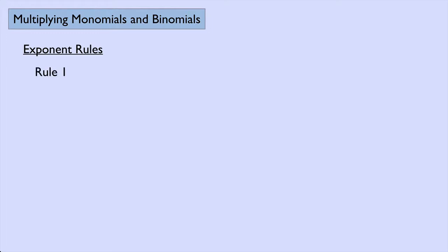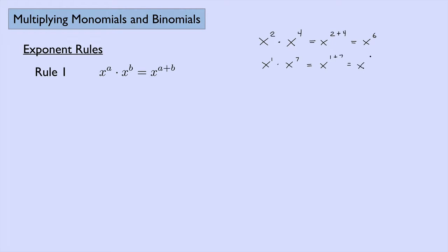Now let's look at multiplying monomials and binomials, but before we do that let's review a few of the exponent rules we're going to use. Rule one says that x to some power times x to another power equals x to the a plus b power. For example, x squared times x to the fourth would be x to the two plus four power, which is x to the sixth power. Another example: x times x to the seventh — this x is really x to the first power — so this would be x to the one plus seven power, which is x to the eighth power.